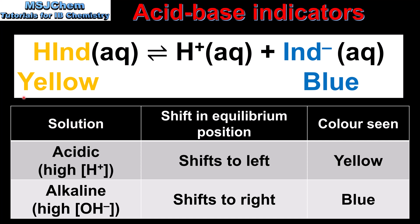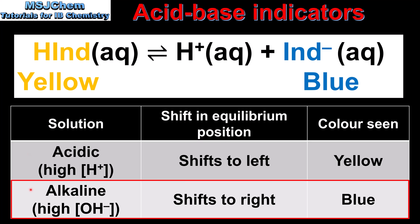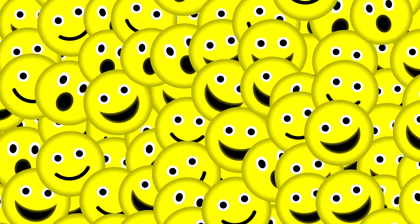In an alkaline solution, which has a high concentration of hydroxide ions, the equilibrium position will shift to the right, in the direction of the conjugate base, and the blue color is seen. This is summarized in the table: in an acidic solution, the equilibrium shifts left and the color is yellow; in an alkaline solution, the equilibrium shifts right and the color is blue.